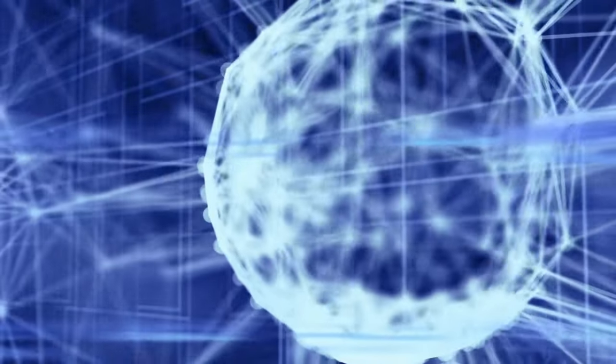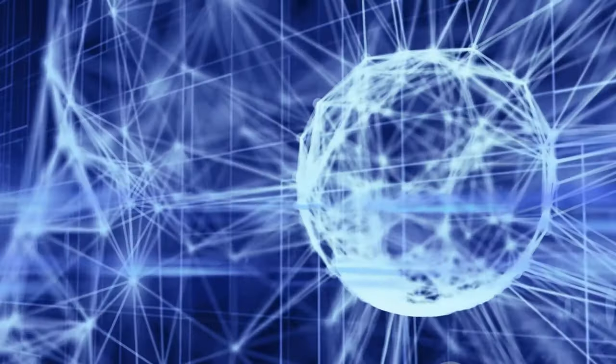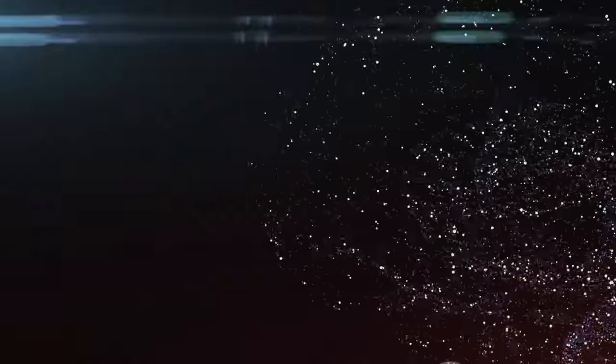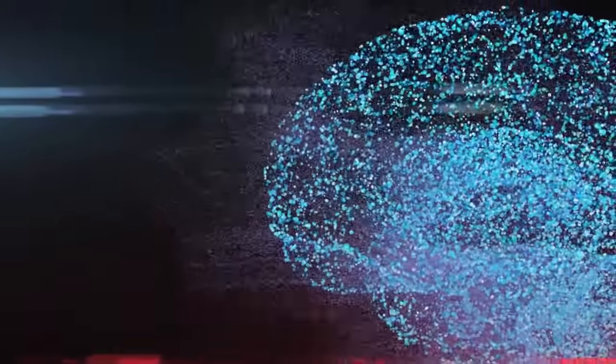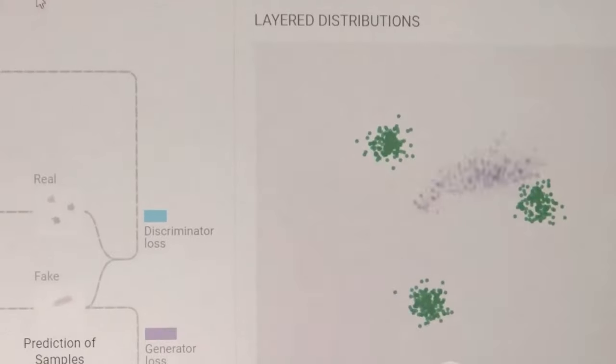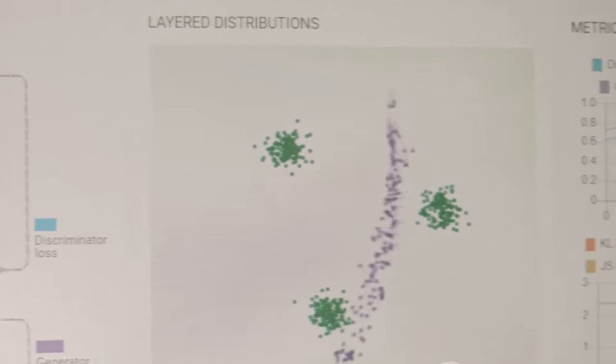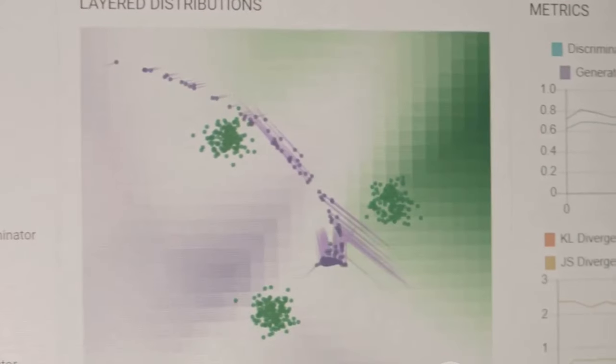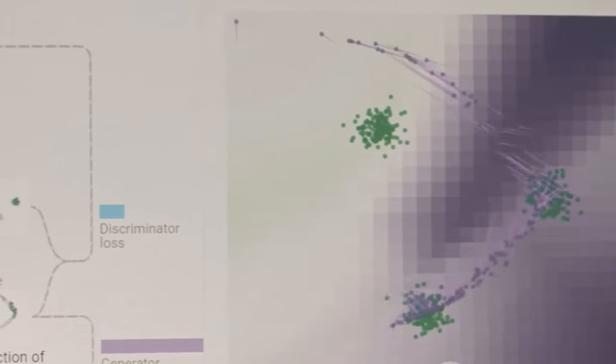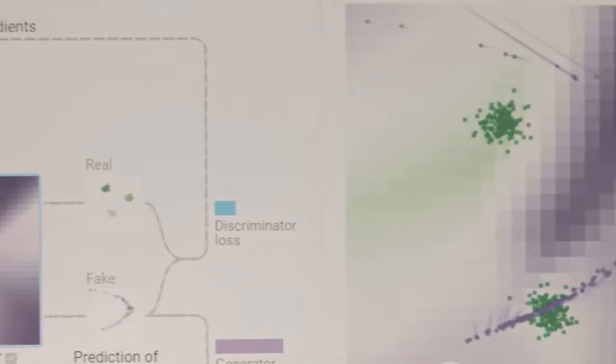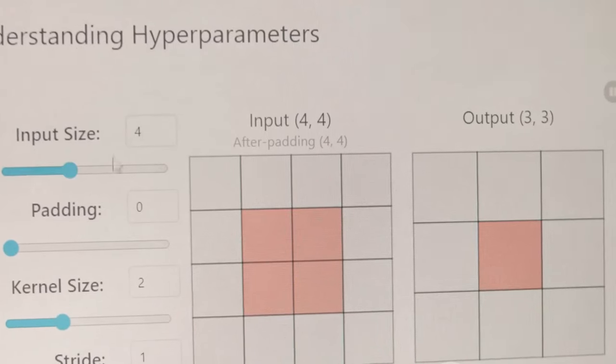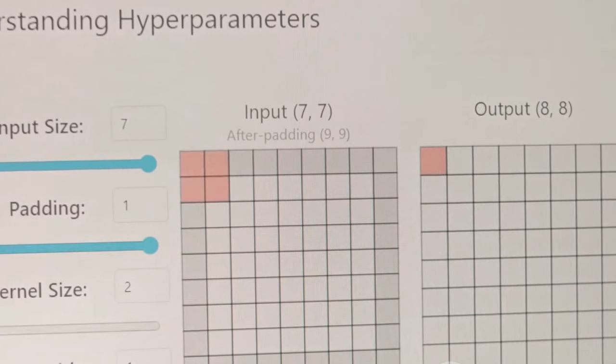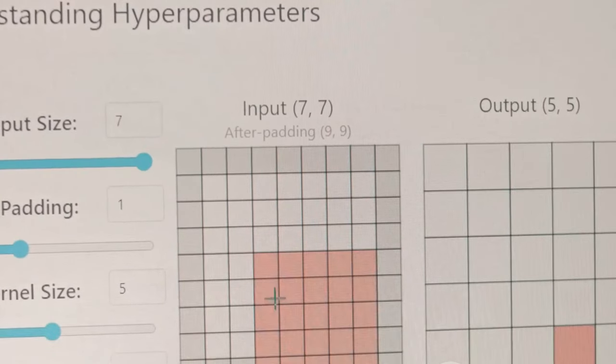This local model approximates the behavior of the complex model, but in a way that's easier for us to grasp. Next we have SHAP, which stands for Shapley Additive Explanations. This technique is based on Shapley values, a concept from cooperative game theory. In the context of XAI, it assigns each feature an importance value for a particular prediction. The beauty of SHAP is that it ensures fair distribution of contributions among the features, just like how players in a cooperative game share the total payout.